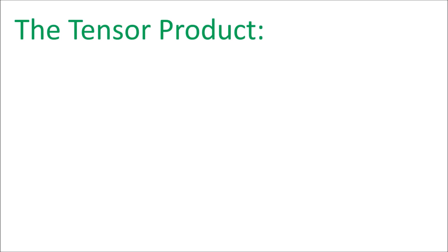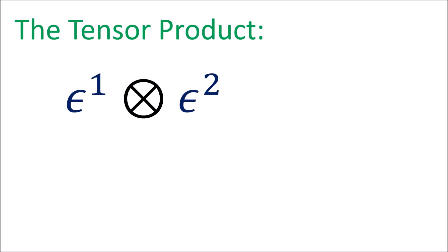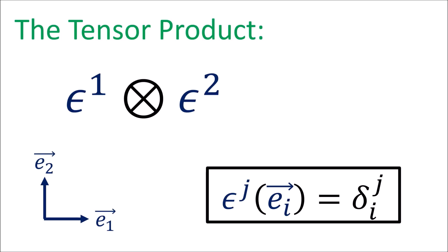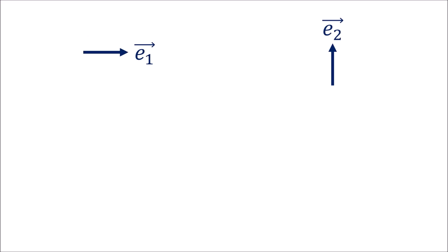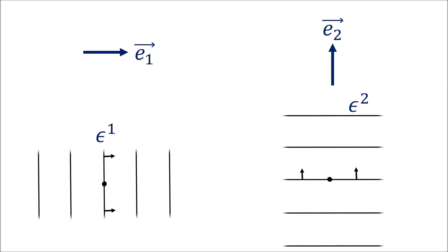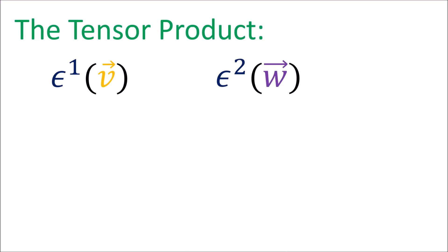To explain this formula we need to understand the tensor product of two covectors. Given a vector basis e1 and e2, we can define the covector basis epsilon 1, epsilon 2 using this formula. To figure out the output of a covector stack acting on some vector v, we just count the number of lines that the vector pierces. In this example the output would be 2.